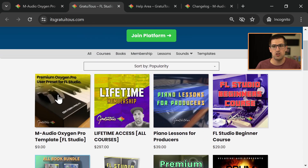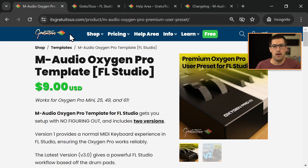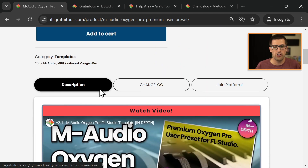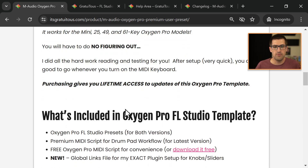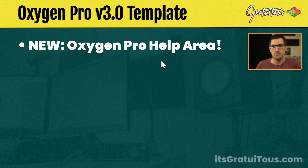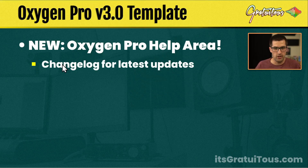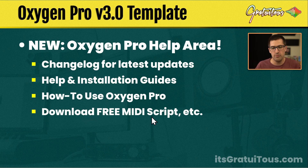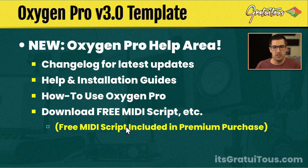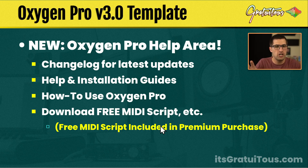You just visit my website, itsgratuitis.com. Here are the templates, you can read more about it, add to your cart. Here's the change log to see what's been added, and this is lifetime access — when you purchase this product, I'll keep you updated. You can visit the change log for latest updates, there are installation guides, how to use the Oxygen Pro, and you can download the free MIDI script. I've also included the free MIDI script in the premium purchase, so all you have to do is purchase, download it, and then install it — you don't have to go search anywhere online.